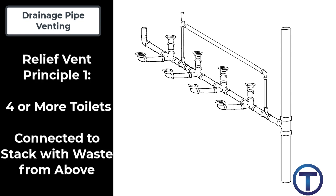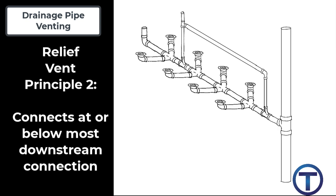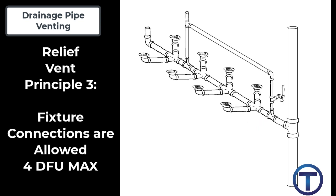Relief vent principle one: the relief vent is required when a horizontal branch with four or more toilets connects to a stack receiving waste from an upper floor level. Relief vent principle two: the relief vent is to be installed at or below the most downstream fixture in the circuit. That would mean it connects just before that horizontal branch connects to the stack.